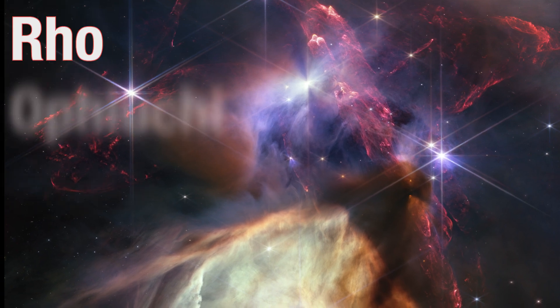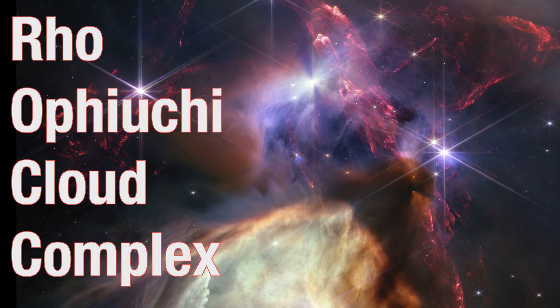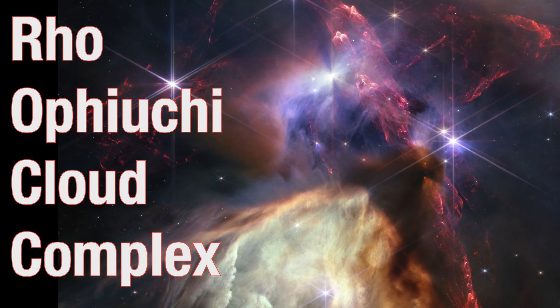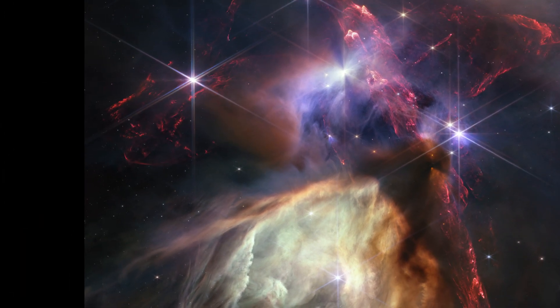The Rho Ophiuchi Cloud Complex, a small star-forming region, is located 390 light-years away, the closest star-forming region to Earth.